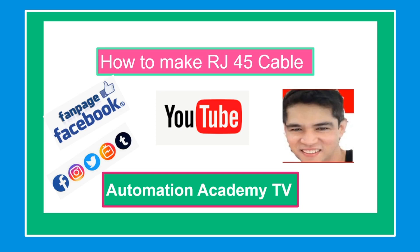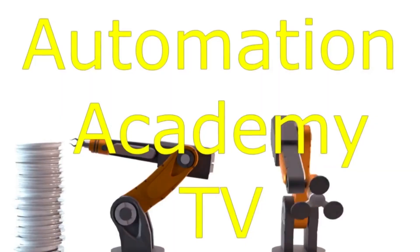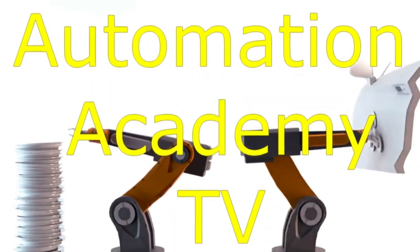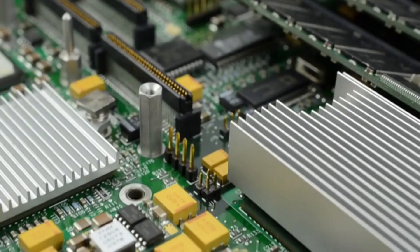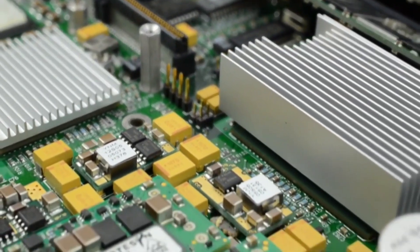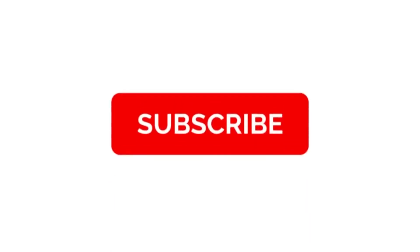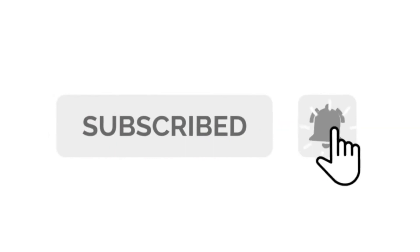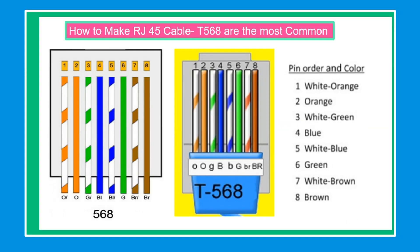Our topic for today is how to make RJ45 Ethernet communication cable. T568A and B are the most common for homes, businesses and industrial Ethernet communications.